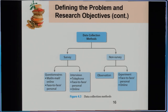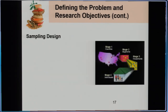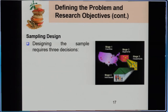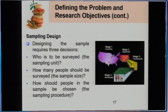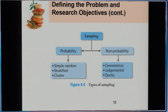Sampling design is important because we cannot survey the whole population due to cost. Designing the sample requires three decisions: who is to be surveyed (the sampling unit), how many people should be surveyed to represent the whole population, and how should people in the sample be chosen (the sampling procedure). There are two types of sampling: probability, which includes simple random, stratified, and cluster; and non-probability, which includes convenience, judgmental, and quota sampling.